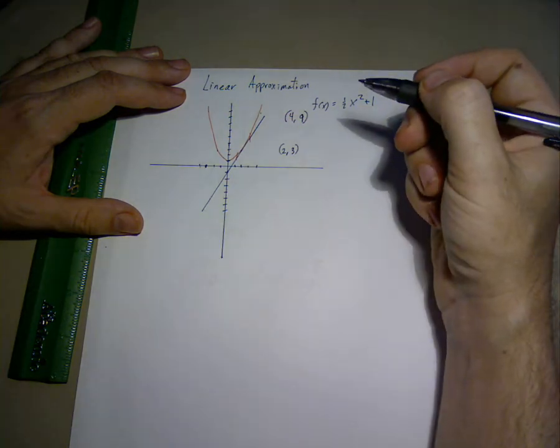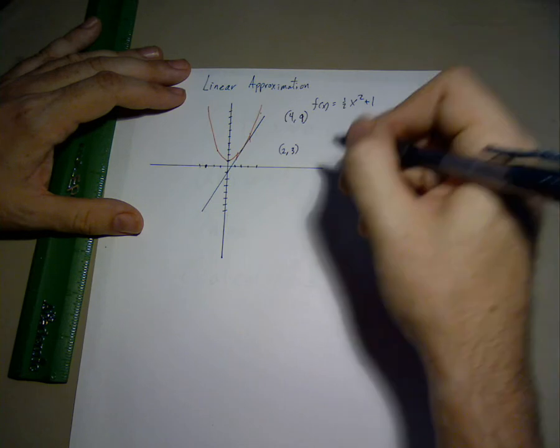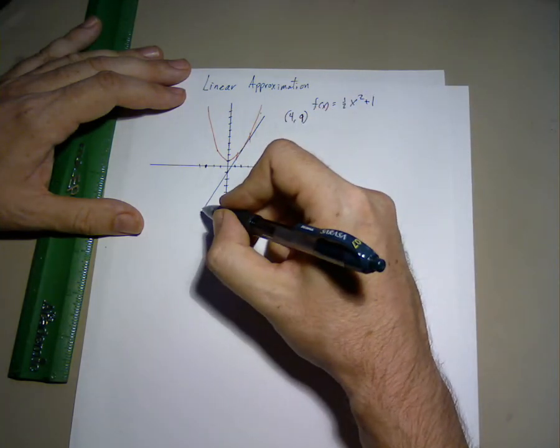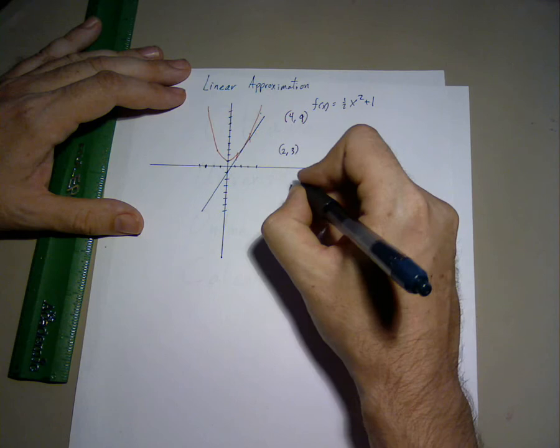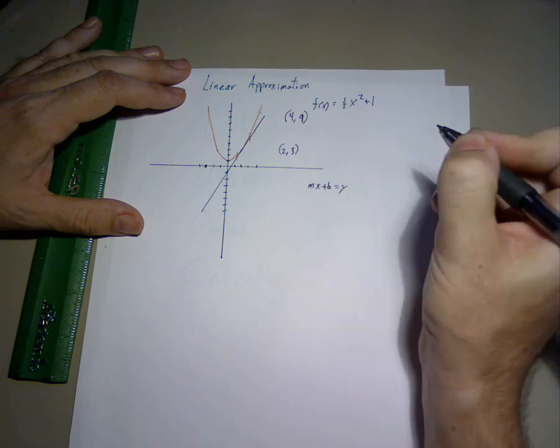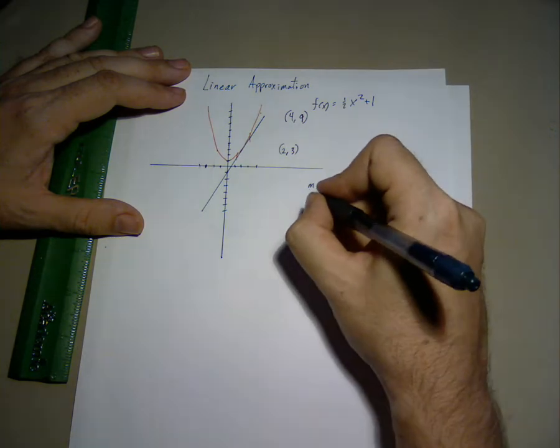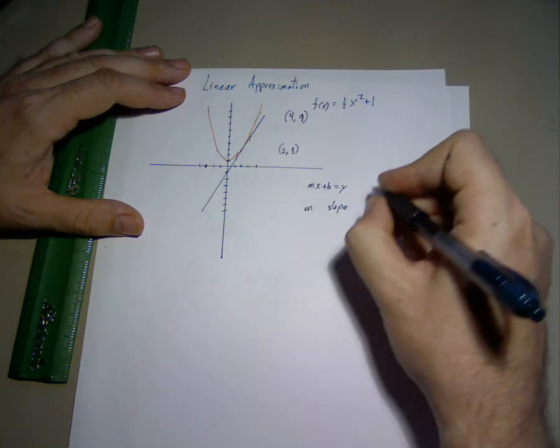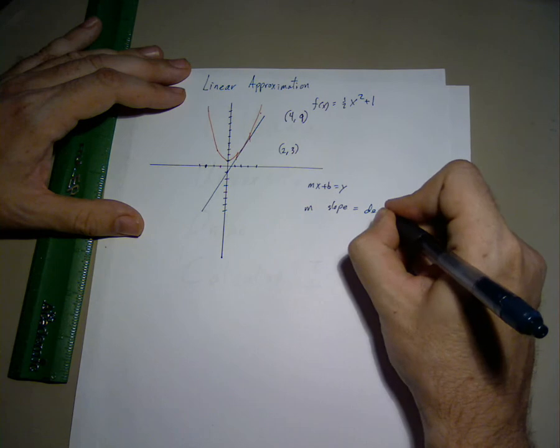To find the slope, the equation of the line is mx plus b equals y. m is the slope, which of course is the same as the derivative.